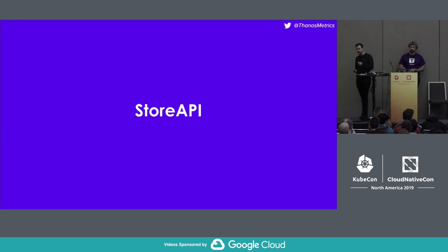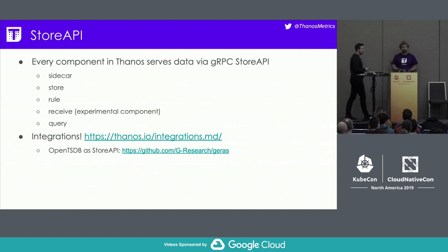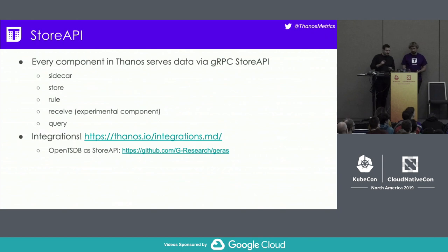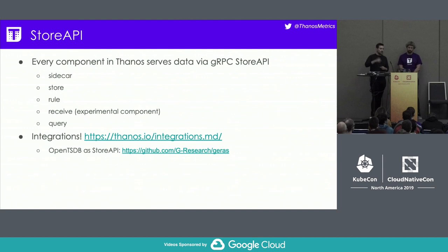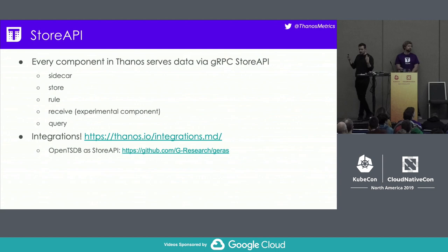This is one of the things I want to deep dive into today. Literally every component either exposes or somehow interacts with this API within Thanos — the sidecar, the store, the ruler, the receive component, and the querier itself. This is a really important thing to understand when you run a Thanos cluster.